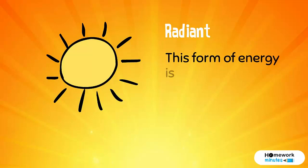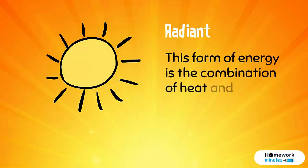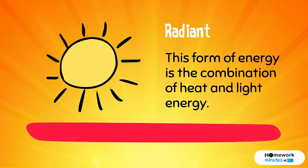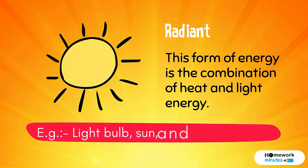Radiant: This form of energy is the combination of heat and light energy. E.g., a light bulb, the sun, and car headlights.